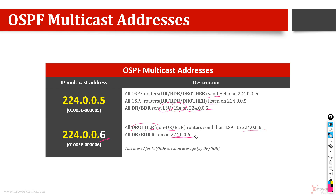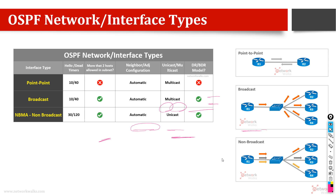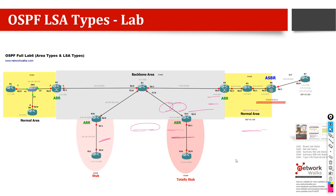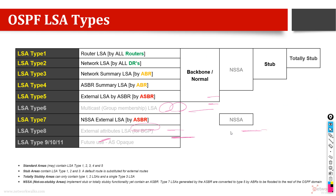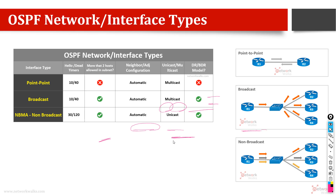This whole process — why they are sending on one address versus the other — is an internal mechanism explained in previous topics, where we discussed in detail which type of LSA is sent to whom, who is receiving on which type of network: broadcast, multicast, non-broadcast, or point-to-point.